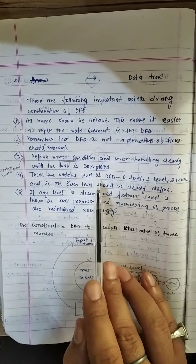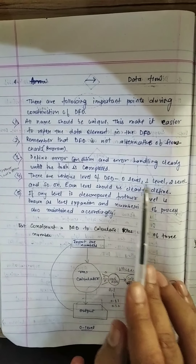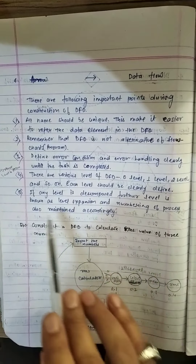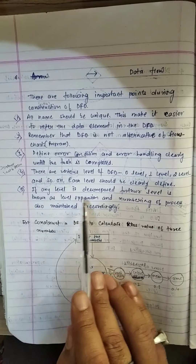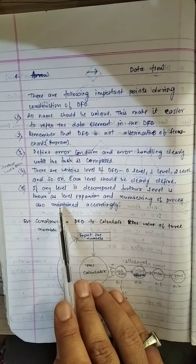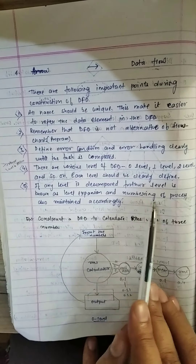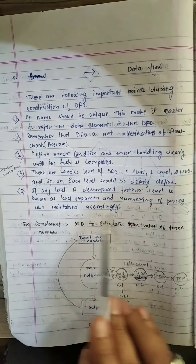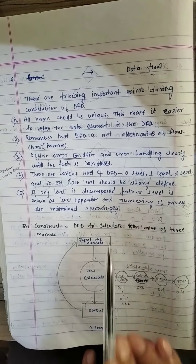There are various levels of DFD: zero level, one level, second level, and so on. If any level is decomposed further, that level is known as level expansion, and the numbering of processes is also maintained accordingly.